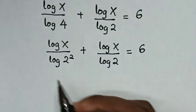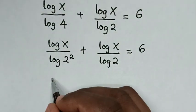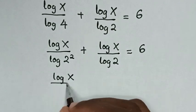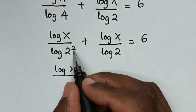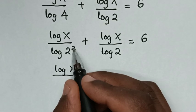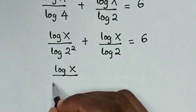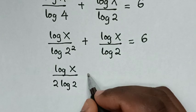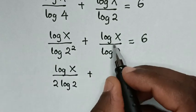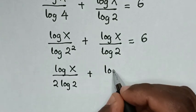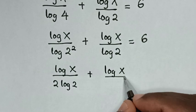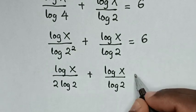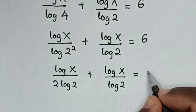In the next step, log of x over — from here, at the power of 2 we will move it to the base. So it will be log of x over 2 log of 2, plus log of x over log of 2, is equal to 6.